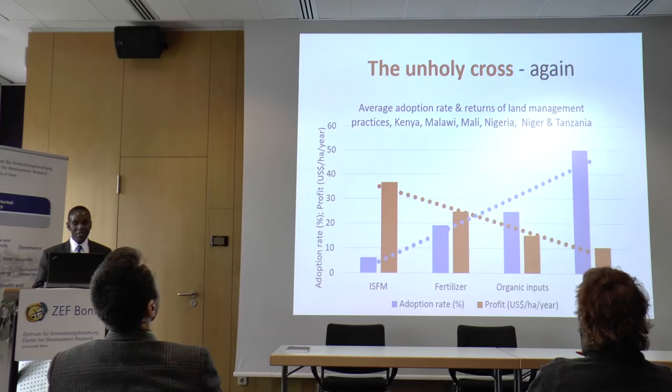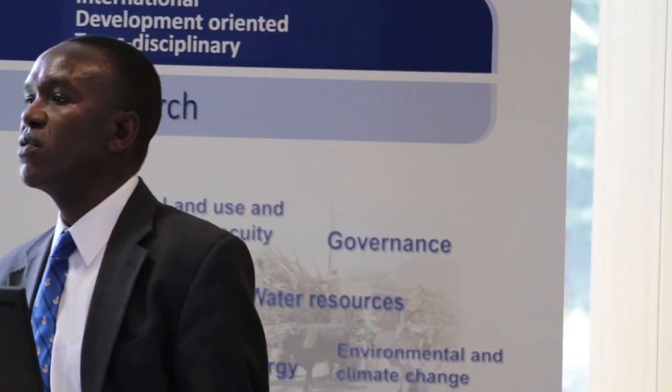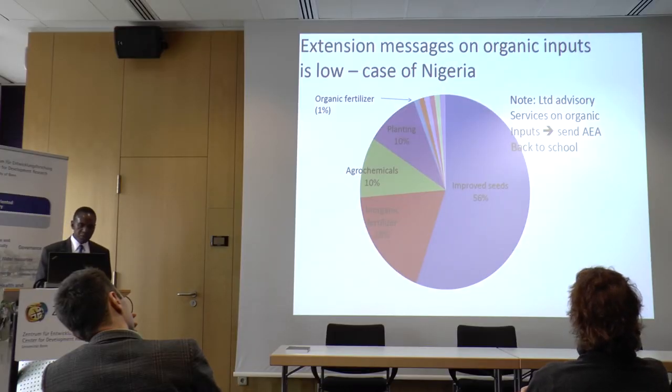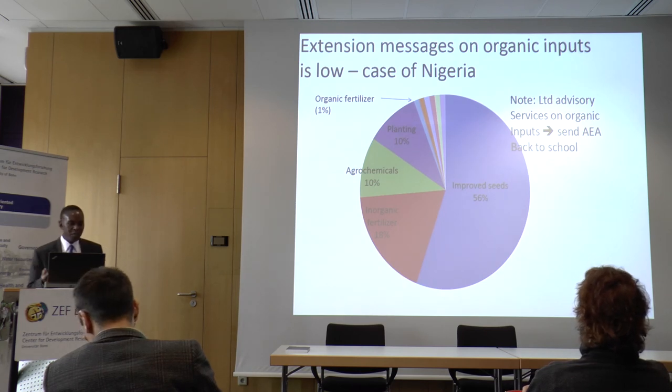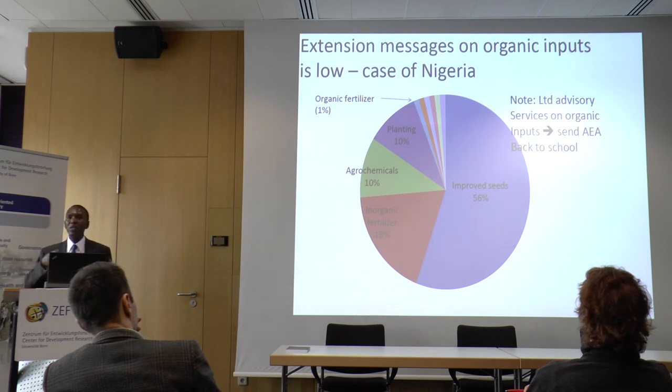The unholy cross appears again in Africa — from data in Kenya, Malawi, Nigeria, and Tanzania — the same pattern we saw in Bhutan. When asked what messages they give farmers, 60% of Nigerian extension agents promote improved seeds, 18% inorganic fertilizers, 10% agrochemicals, 10% planting spacing, and only 1% mention organic inputs. There is nothing about climate change or ecosystem services — meaning farmers are not being educated about critical aspects of sustainable land management.